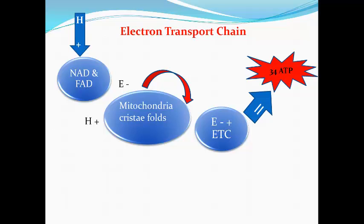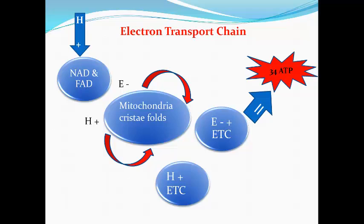The hydrogen ions (H⁺) also pass down the mitochondria cristae folds and combine with oxygen to form water, which is exhaled via the lungs as a byproduct of the electron transport chain. So a major point here is that 34 ATP are generated from stage 3, making it the most productive stage of the aerobic energy system.